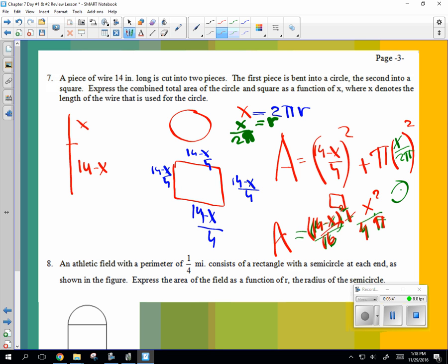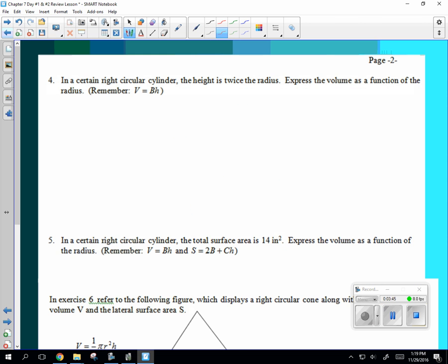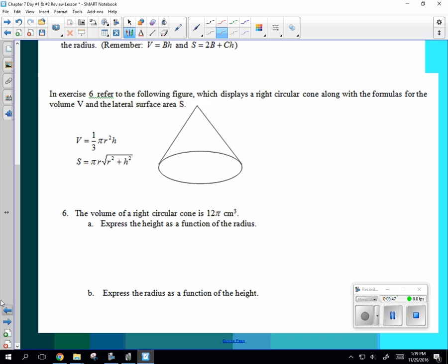Should we do six real quick? That was pretty fast. Let's do six quick. So we did eight already. The volume of a right circular cone is 12 pi. So 12 pi is equal to one third pi R squared H. I just got that from the formula.